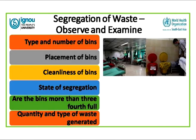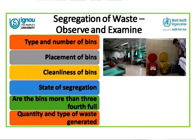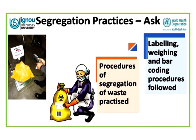Regarding segregation, we must observe the type and number of bins, where they are placed — whether near or away from patients, whether closed or open — their cleanliness, and the state of segregation. Is waste placed in the correct color-coded bin, or is it mixed? Are bins only three-quarters full or overflowing? We also check the quantity and type of waste generated in various locations, whether bins are appropriately sized, and whether staff are labelling, weighing, barcoding, and following proper procedures.